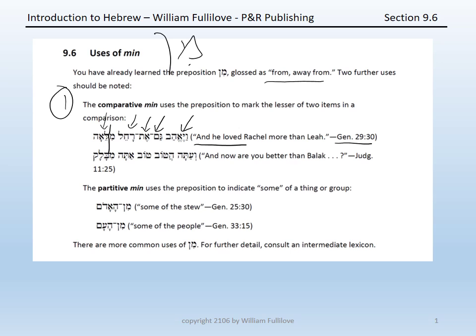Notice it's not simply the name Leah — we have meleah, with a doubling of the lamed. This is min with the nun of min having assimilated into the lamed, causing its doubling. Min marks Leah as the lesser of the two loved by Jacob.